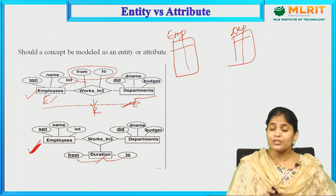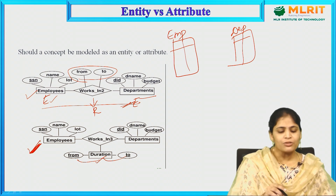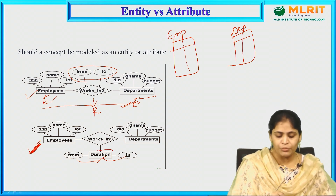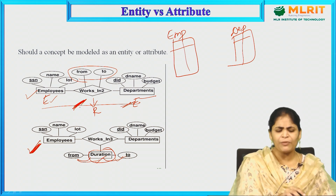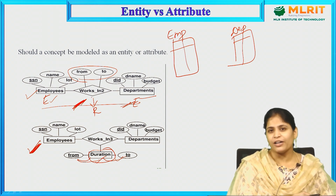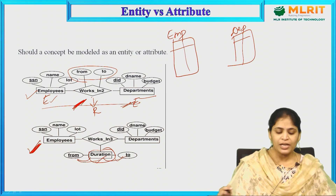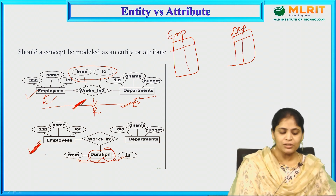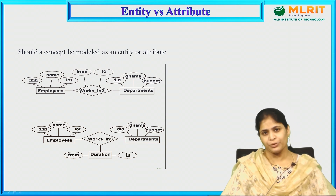To consider a particular diagram, it is purely based upon the application or the design that you are going to develop. Here we can add one more entity — duration — and for that entity, I have represented the attributes 'from' and 'to'. In the above diagram, we have only two entities and the attributes are represented to the relationship itself as descriptive attributes, which is also correct. But if we have large volumes of data, then we can prefer the second model. That is what we call entity versus attribute — whether we should consider a particular concept as an entity or an attribute.